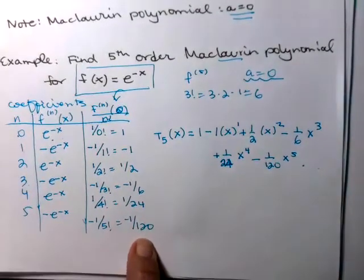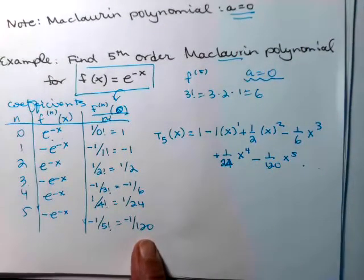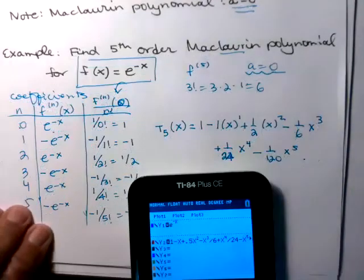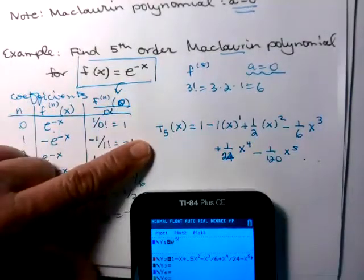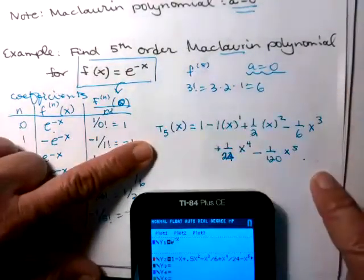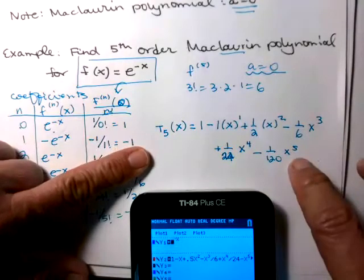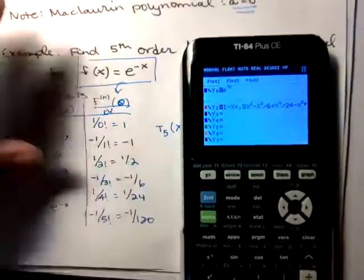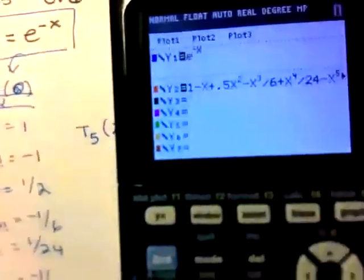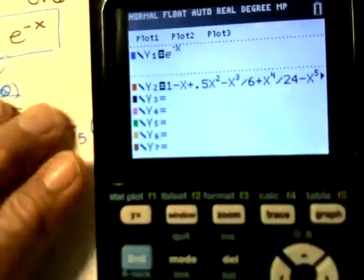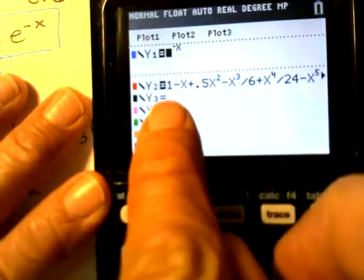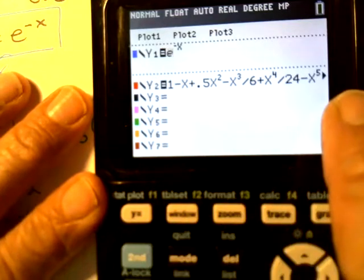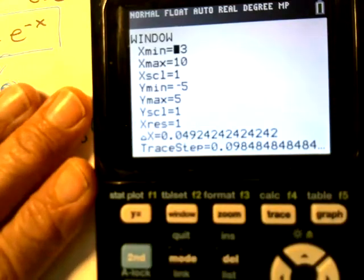I'm going to pause, grab my calculator, and show you how these guys match up. So here's my Maclaurin polynomial, my Taylor polynomial, out to the fifth degree. Here is my calculator screen. So I have my e to the negative x here in my y1. In my y2, I've put in that Taylor polynomial. I'm going to show you my window just so you can kind of, if you want to follow along. I'm only using this for x's near zero. So I don't have a big x range. And then the y values are going to be small. So I just have those.